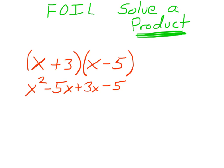I then can clean up my solution here. This is solving for the product - I did it. This is the product, but I can clean it up by combining these two like terms in the middle, the negative 5x and the positive 3x. I can combine those to give me a negative 2x.